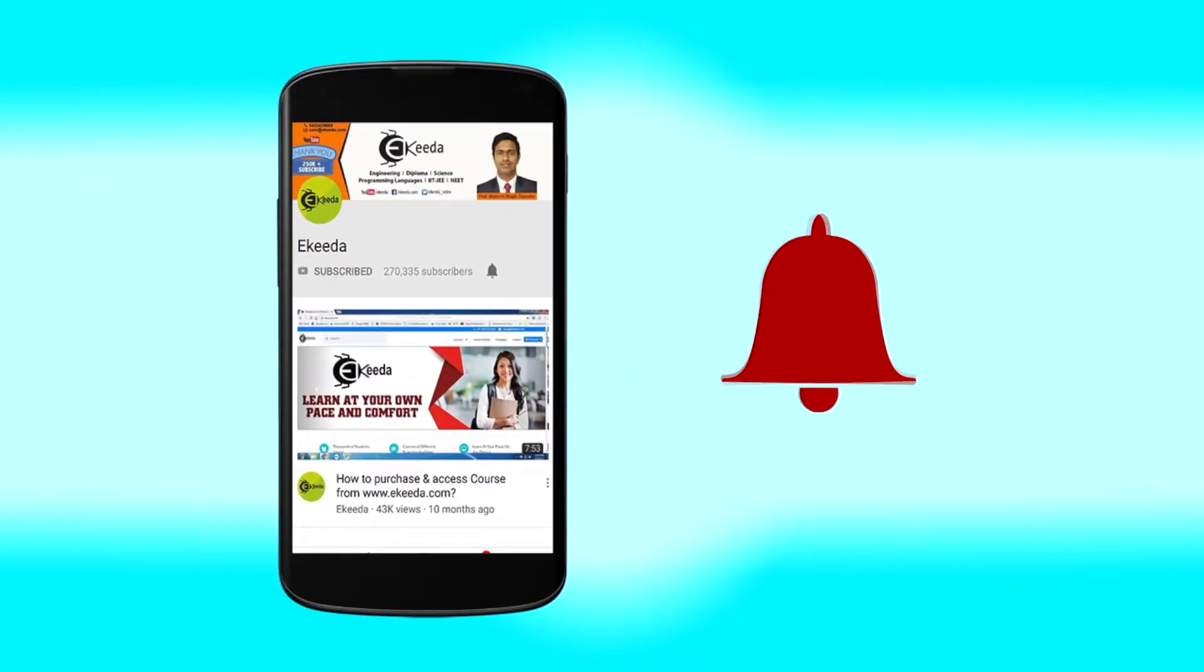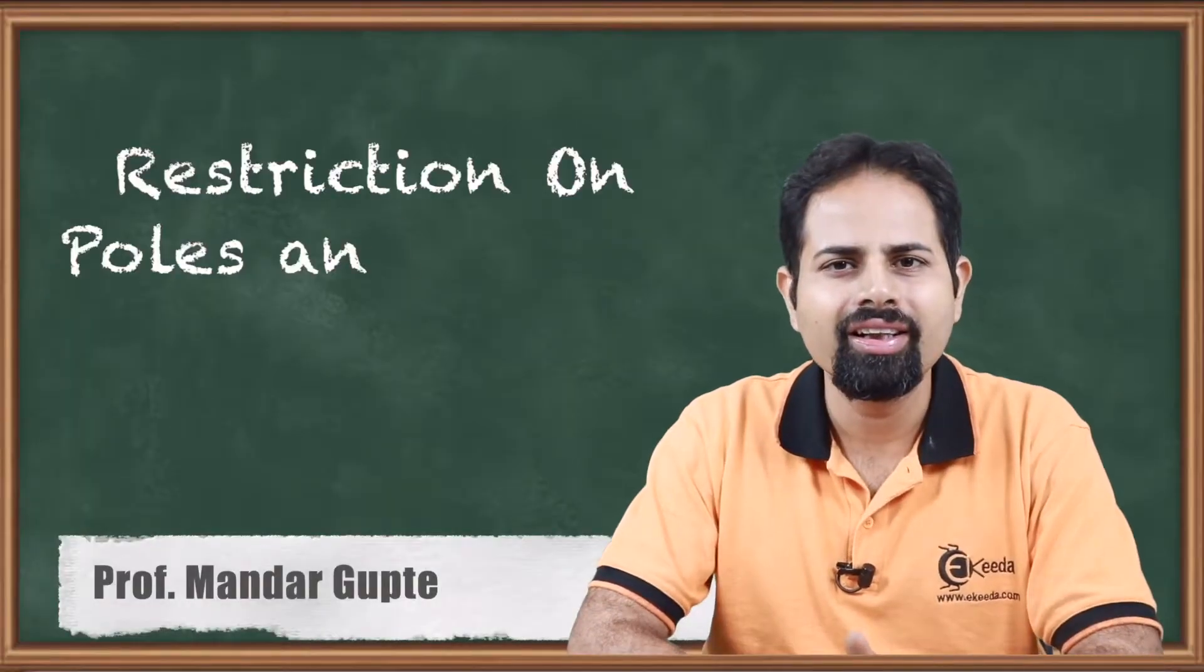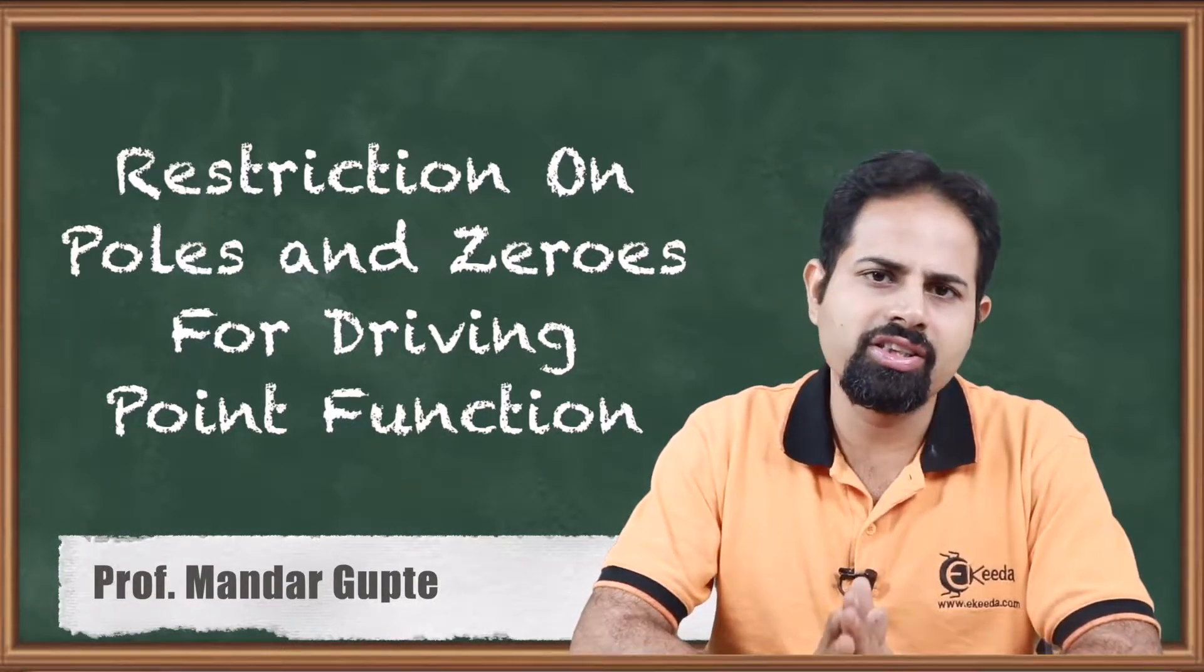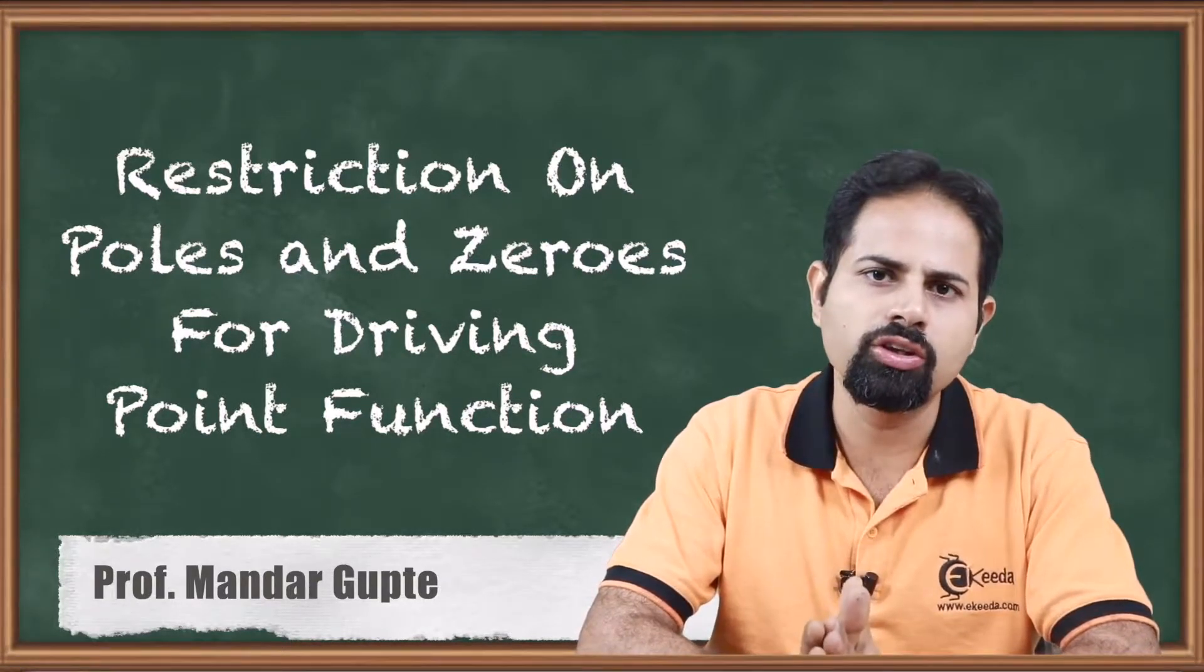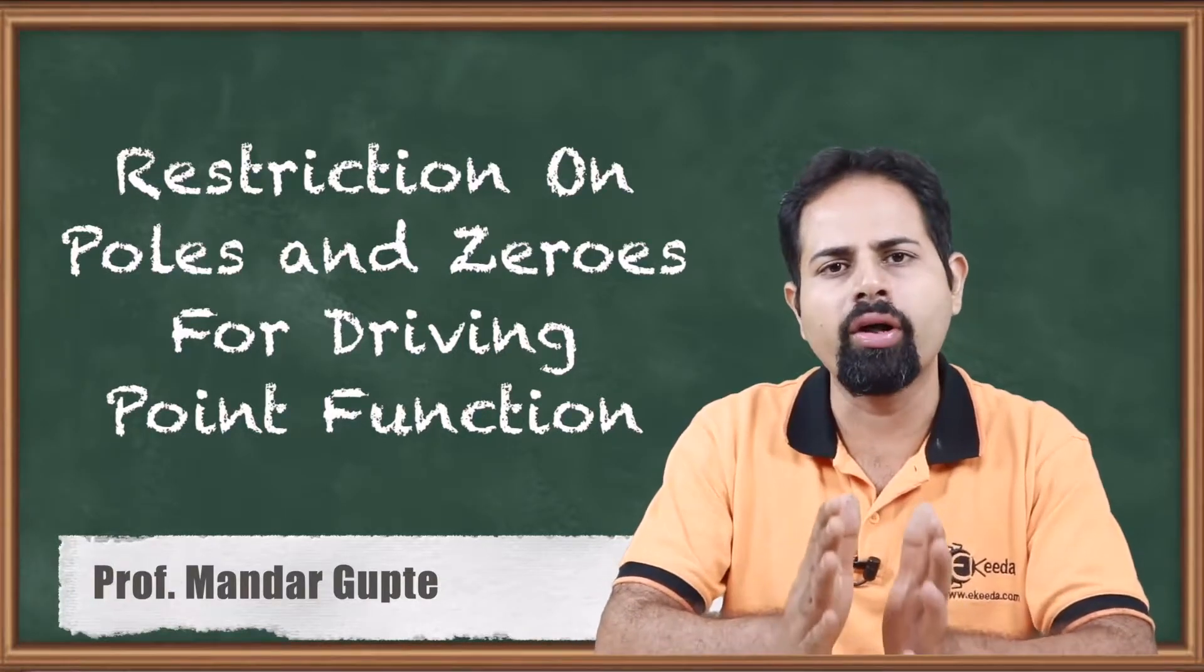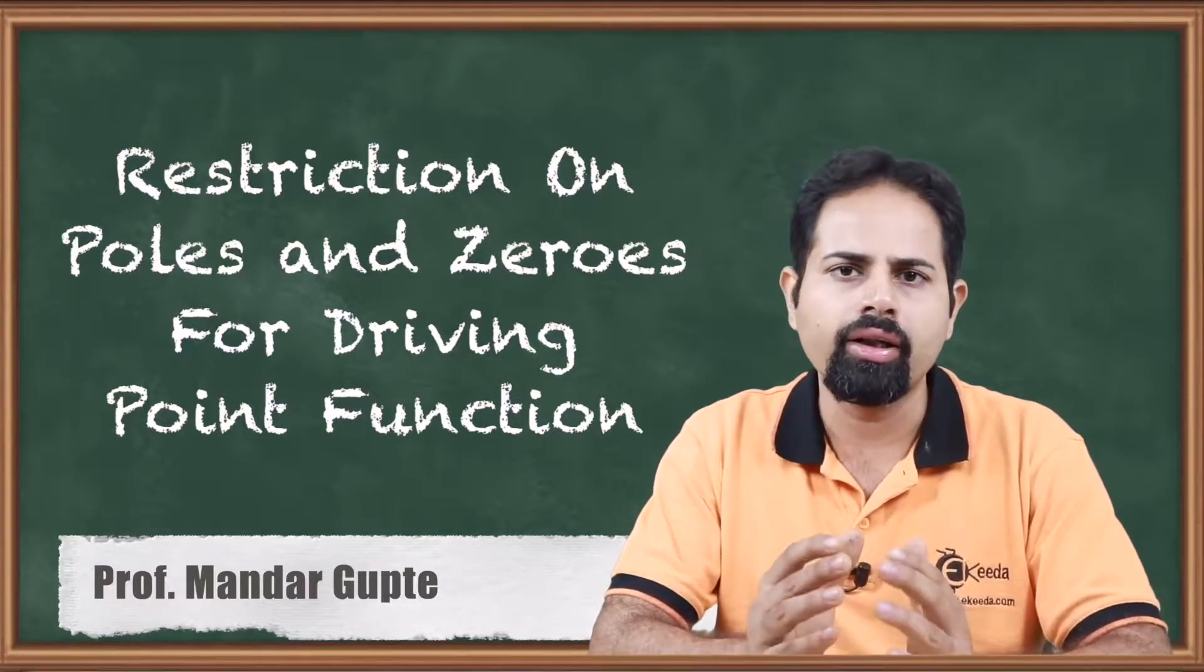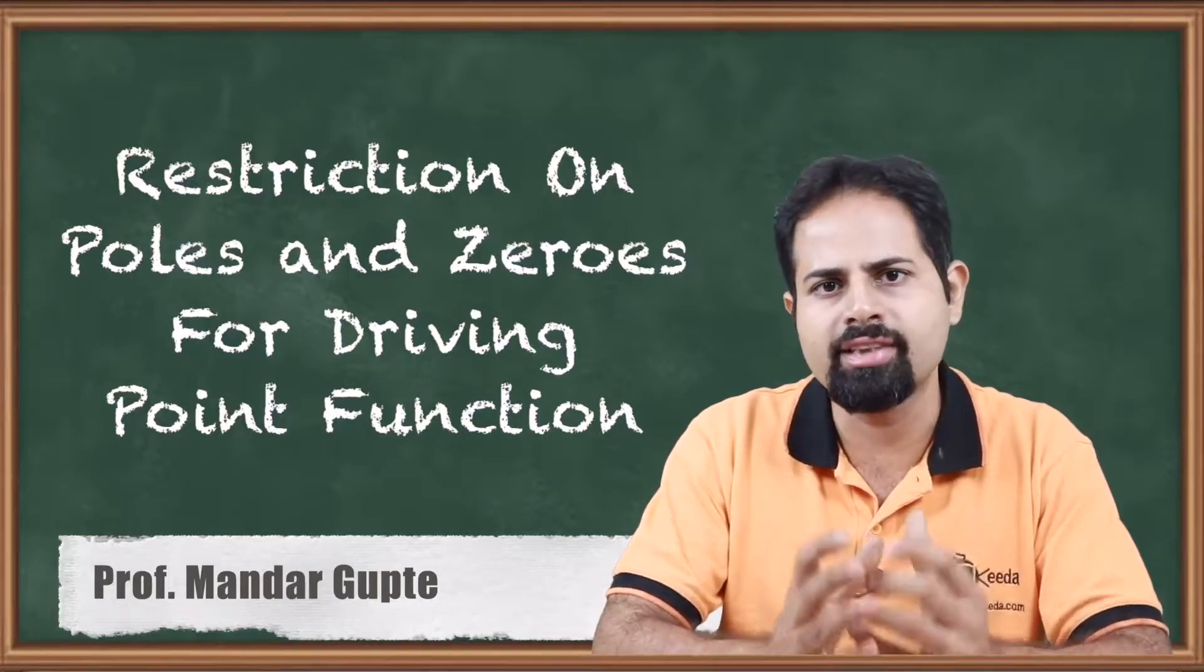Click the bell icon to get latest videos from eKIDA. Hello guys, welcome to eKIDA. Today we will see what is the restriction or set of rules on poles and zeros for an impedance function or driving point function which is the driving point impedance. We all know what is driving point impedance but a function to be a driving point impedance there are certain rules which it has to satisfy.